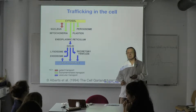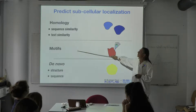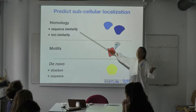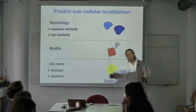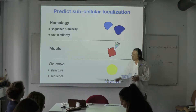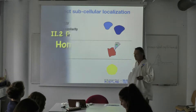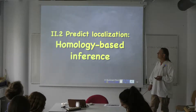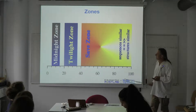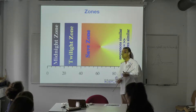Now, if we want to predict subcellular localization, there are different approaches. We can use homology information, or we can use motifs — something in between. Motifs are essentially sequence similarity, but not over the entire protein; they are local stretches. Then I will talk about de novo methods, sequence-based, not structure-based. The first approach is homology-based inference. When two proteins are very similar, you have a safe zone where you can infer they likely have the same subcellular localization.